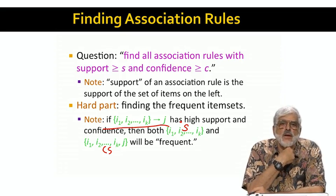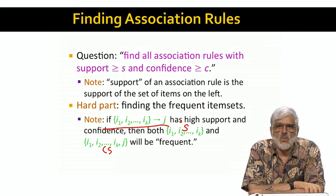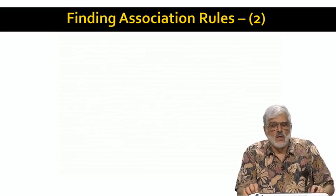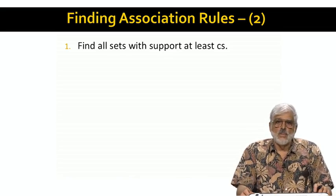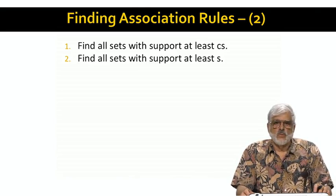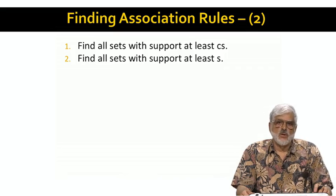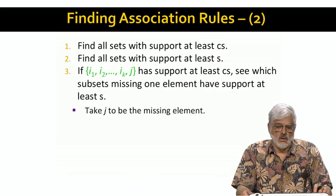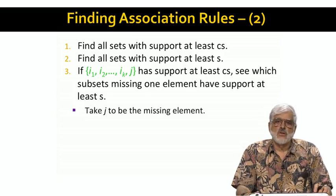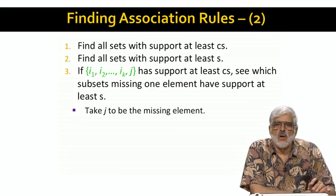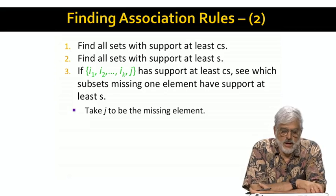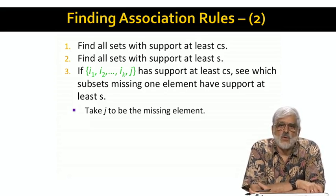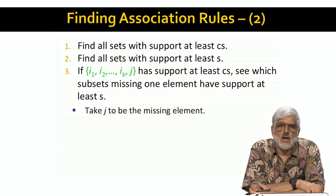Now, if C is large, then CS will be close to S. Let's say perhaps one half of S. And here's a recipe for finding all the association rules with support S and confidence C. Start by finding all the itemsets with support at least CS. Also find the itemsets with support at least S. That will be a subset of the first set of itemsets. Let's focus on an itemset in the first collection. That is one with support at least CS. Suppose it has K plus 1 items as members. There are K plus 1 subsets of size K, each formed by removing one of the items. I've abused the notation a bit by singling out one of them as J, the item to be removed, leaving I1 through IK. But in fact, we have to do this K plus 1 times, one for each of the items.